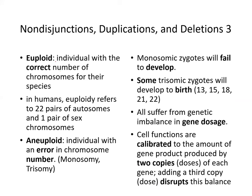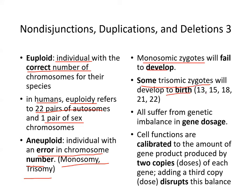Euploidy refers to an individual with the correct number of chromosomes — in humans, 22 pairs of autosomes and one pair of sex chromosomes. An aneuploid has an error in chromosome number. Monosomy and trisomy are both aneuploid conditions. Monosomic zygotes often fail to develop because they're missing an entire chromosome. Some trisomy zygotes — trisomy 13, 15, 18, 21, and 22 — can develop to birth but all suffer from genetic imbalance in gene dosage, since cell functions are calibrated to two copies of each gene.